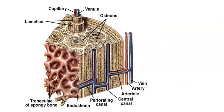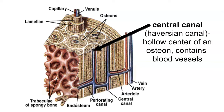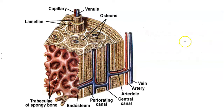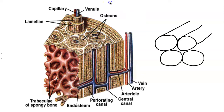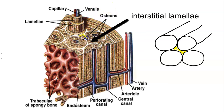The center of the osteon is known as the central canal or the Haversian canal, and it contains blood vessels. If we were to take osteons and place them as close together as we could — because they're cylindrical structures — no matter how close we place the osteons together, there's always going to be a gap in between. This gap is filled in with incomplete lamellae called interstitial lamellae, filling in the gaps in between the osteons.